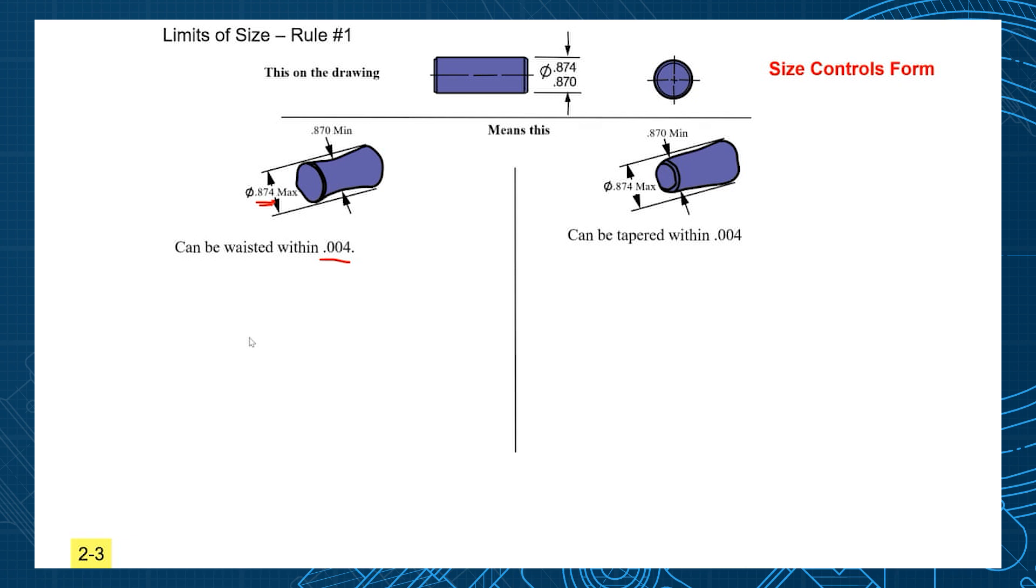How bowed or bent could it be? Oh, no more than four-thousandths - it's got to fit inside the .874 hole. Cross-section could go down to .870 and be bent within four-thousandths. How barrel-shaped could it be? Starting to see my theme here?